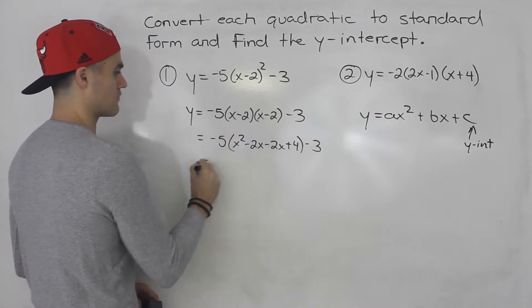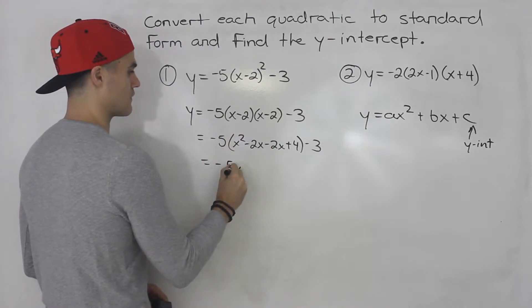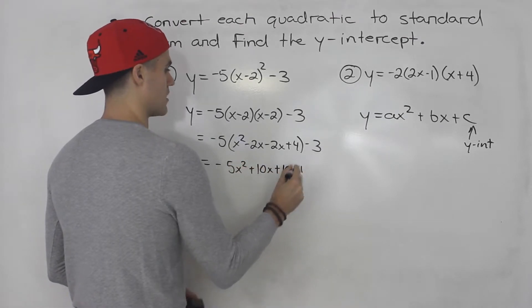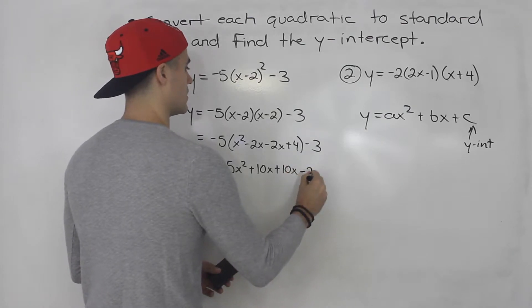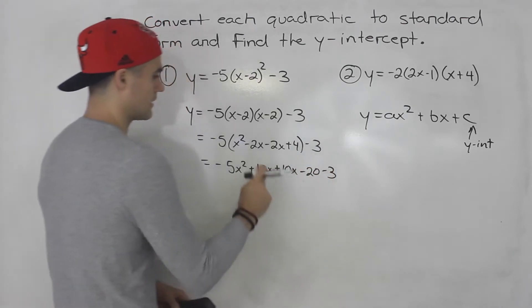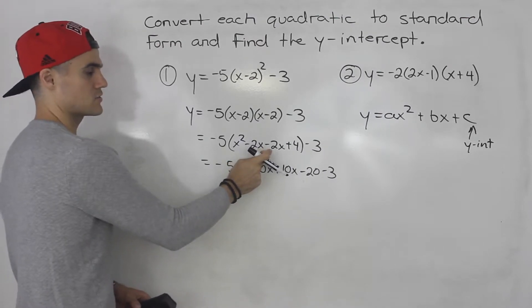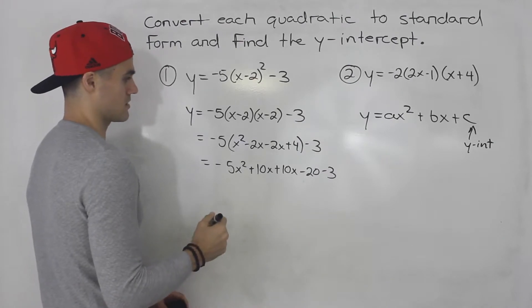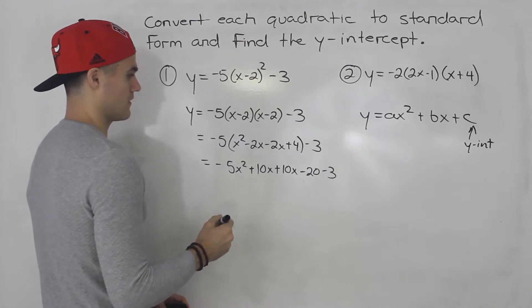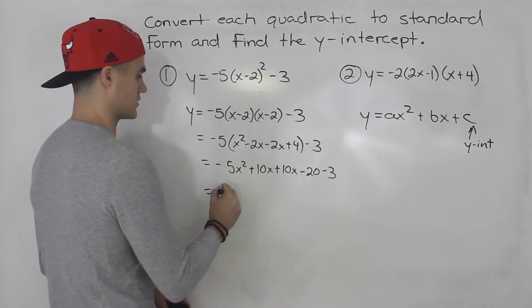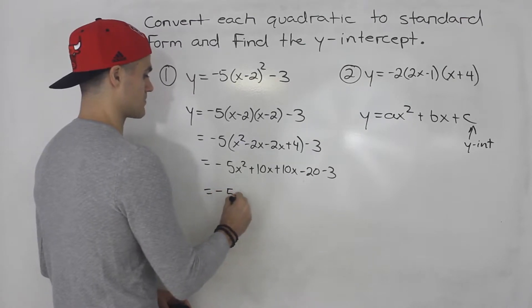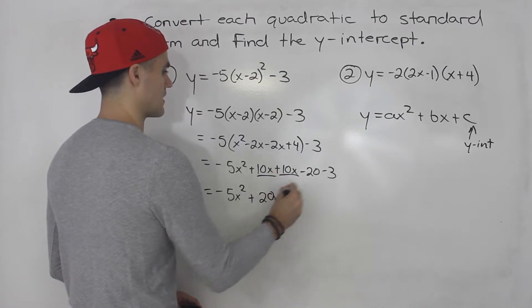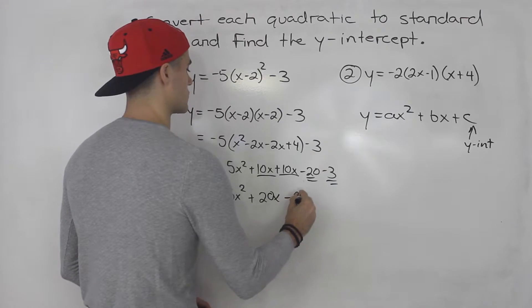Then you can distribute the negative 5 in the bracket so you have negative 5x squared plus 10x plus 10x minus 20 minus 3. Now you could have also simplified this minus 2x minus 2x to be negative 4x and then brought the negative 5 in, but either way works. And then from here it's just all about simplifying like terms. So the negative 5x squared, that's by itself, 10x plus 10x that gives us 20x, and then minus 20 minus 3 that gives us negative 23.